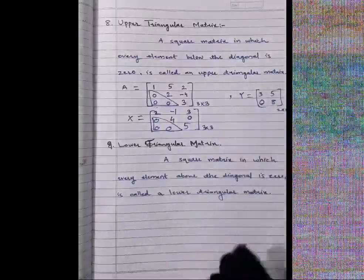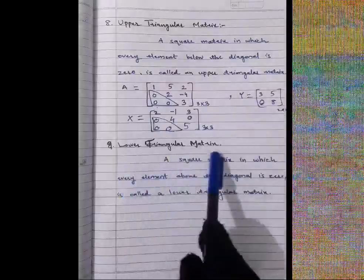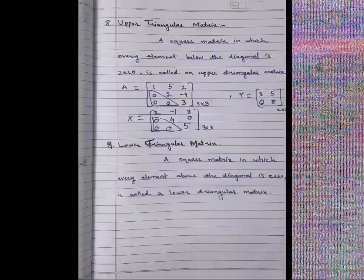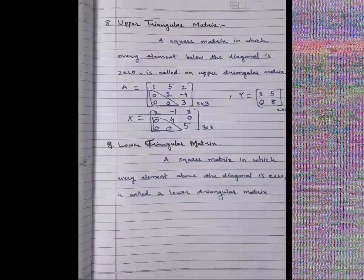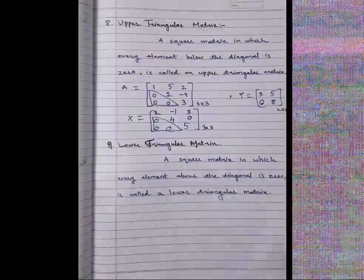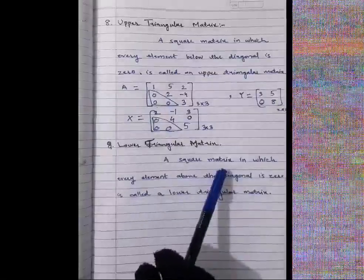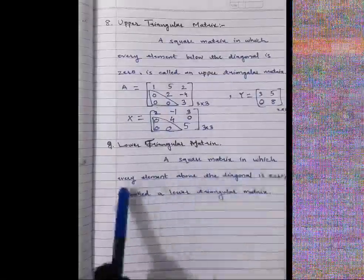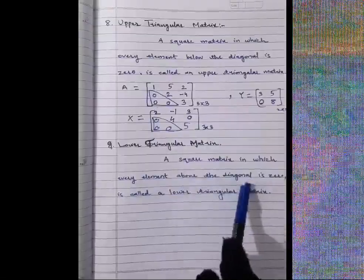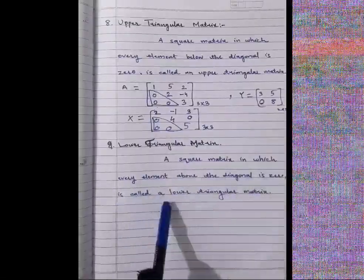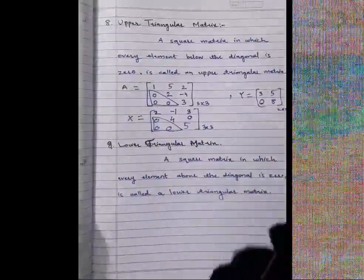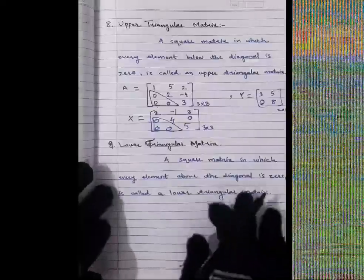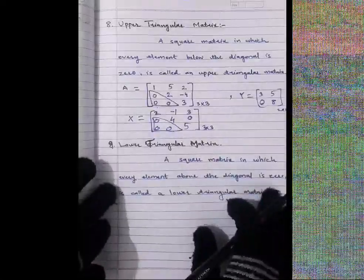The lower triangular matrix has the opposite condition. A lower triangular matrix is a square matrix in which every element above the diagonal is zero.